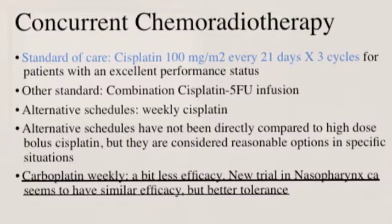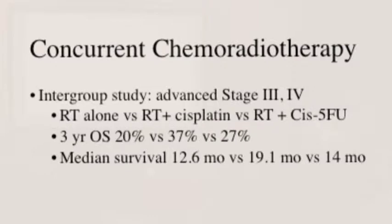Carboplatin is a cousin of cisplatin that is sometimes used in patients who might not be able to tolerate cisplatin. Most recently in 2014, we had a trial looking at carboplatin in nasopharyngeal cancer — that's back of the nose — and we actually found that carboplatin was almost equally effective, although traditionally all previous trials have never found it quite as effective as cisplatin. Another large intergroup study in advanced stage 3 and stage 4 compared radiation therapy alone versus radiation plus cisplatin versus radiation plus cisplatin and 5-FU. Overall survival was 20% versus 37% versus 27% — that 37% versus 20% is pretty significant, a large number of patients able to be saved by the addition of medication to the radiation.